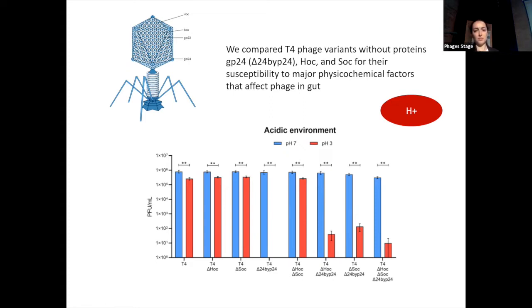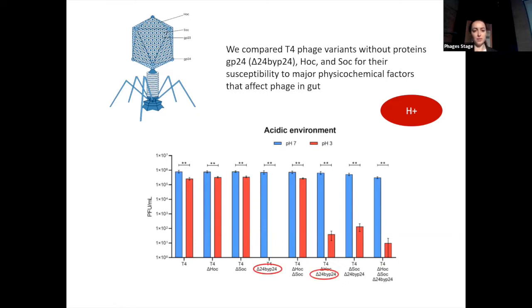Here we present results for the acidic environment. We observed that the strongest effect came from removal of the GP24 protein. The common feature of the most sensitive phages is the lack of GP24 in the corner, seen in these three or four cases. We can say that resistance to an acidic environment is mediated by the GP24 protein.